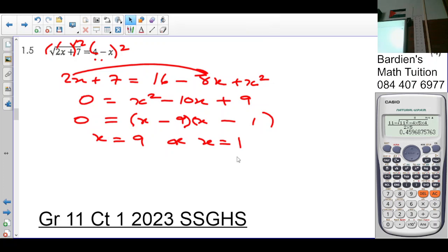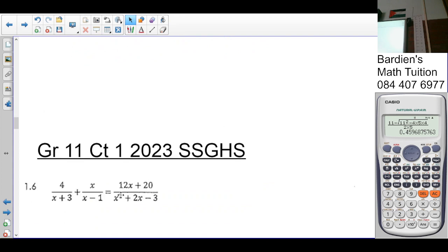But very important, we need to test if it works. So what we do is we substitute 9 into the equation. 2 times 9 is 18 plus 7 is 25. The square root of 25 is 5, and 4 minus 9 is minus 5. So 9 doesn't work. We substitute 1 in. 2 times 1 is 2 plus 7 is 9, the square root of 9 is 3, and 4 minus 1 is 3. So 1 works. All okay with that?